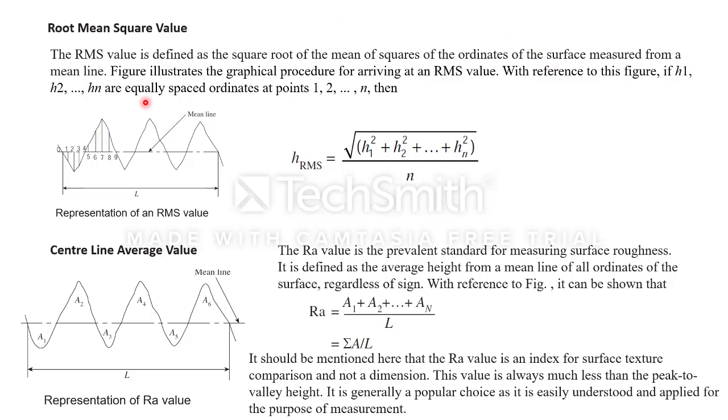With reference to the figure, if H1, H2, H3 and so on are equally spaced ordinates at points 1, 2, and N, then HRMS can be given as root of H1 square plus H2 square plus HN square, where H represents the distance from the mean line, either negative or positive value. As the square nullifies the negative term, divide by how many values we are taking. Then we will get the roughness height from the mean value.